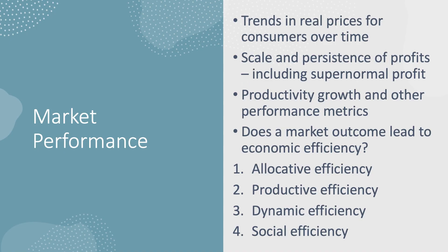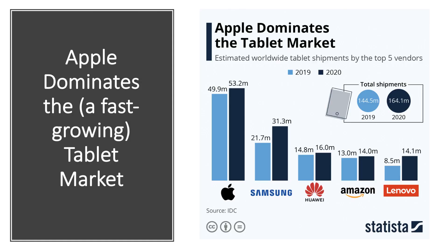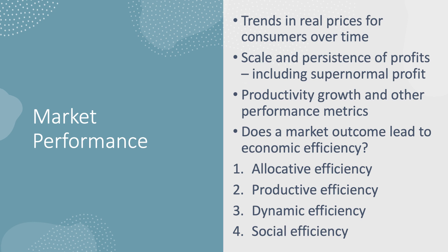That leads to the third part: market performance — or outcomes. Going back to the tablet market, what happens to price, functionality, and quality over time? Are tablets becoming relatively cheaper in real terms? Performance includes looking at profitability — the extent to which firms earn and sustain super-normal profit. We can also examine efficiency performance, particularly productivity growth, and other metrics such as quality of service targets set by regulators and environmental outcomes.